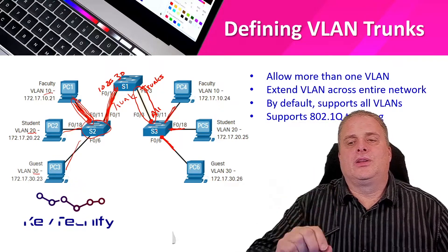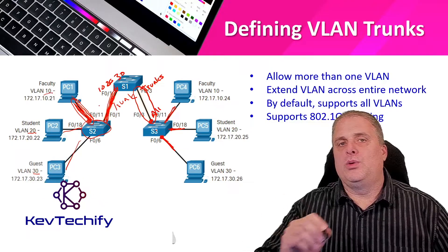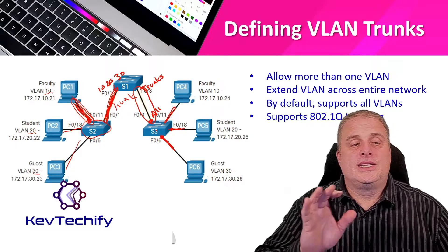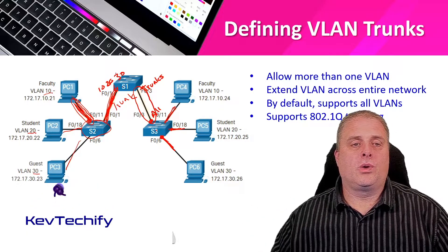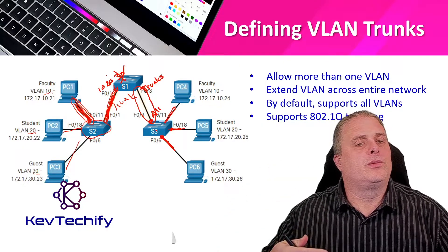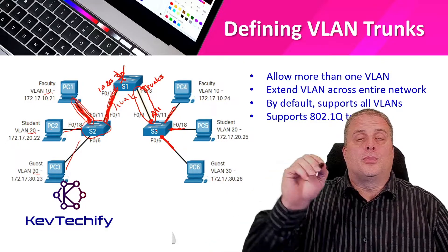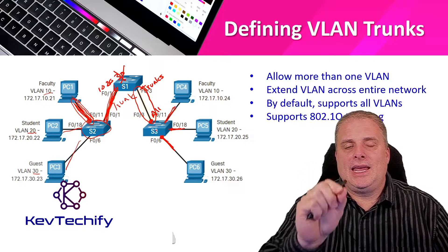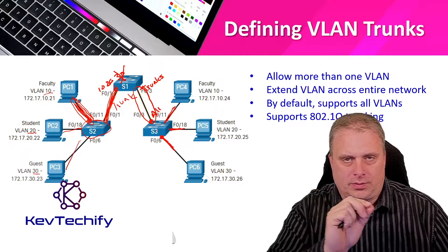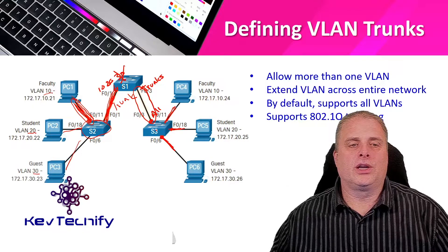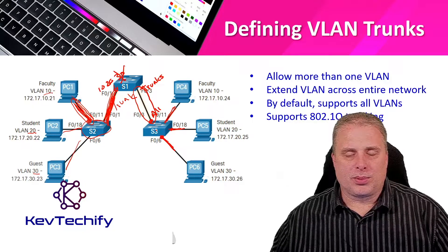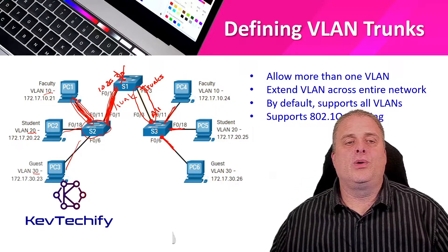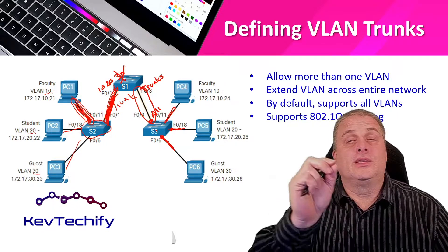By default, a trunk handles all VLANs going across it. But you can allow only certain VLANs — for example, allowing only VLANs 10 and 20 effectively denies VLAN 30 from crossing that trunk connection. The protocol we're talking about here is 802.1Q trunking. This is the protocol that puts tagging into the header information to identify which VLAN a frame belongs to. Even though many VLANs travel across the trunk, you can look at that tag in the header and identify — this is VLAN 10 information.